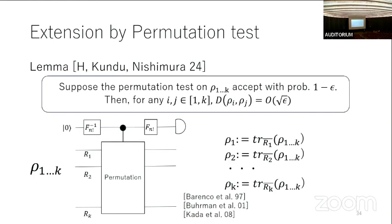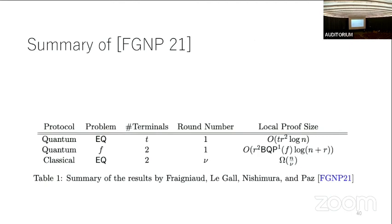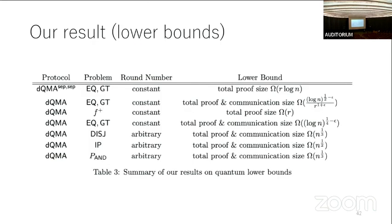Any other questions? — You showed both an upper and lower bound. Which do you think is the tight side — do you think the upper bound from your protocol is tight? — I feel the upper bound is tight, because I don't know how to construct a more efficient quantum protocol. So I feel we could prove a stronger lower bound. — Okay, thank you.